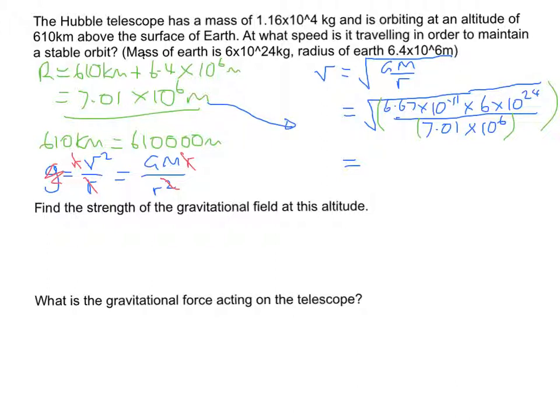So plug that all into the calculator and you'll end up with 7555.78 which is a little bit more accurate than you need. So we will call this 7.6×10^3 meters per second. That's the answer for the first one. That's the speed at which you'll be traveling.